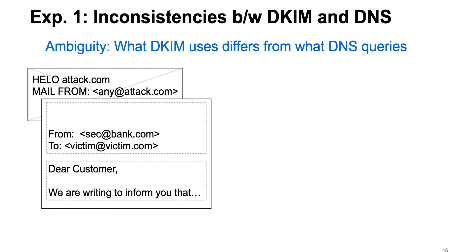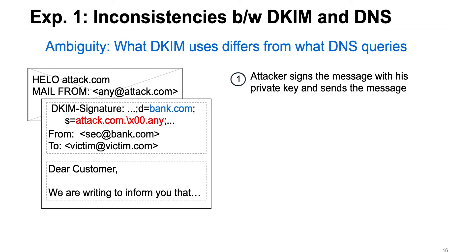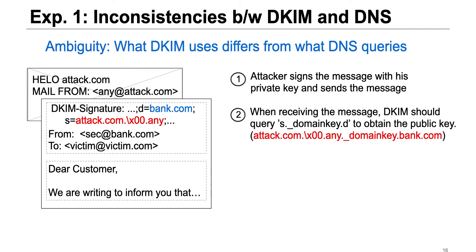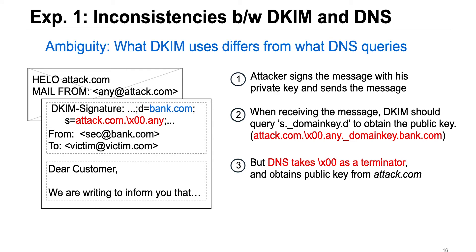The first example exploits inconsistencies between DKIM and DNS — this is the bug we demonstrated at the beginning of this talk. The attacker constructs a spoofing message and signs it with his private key to generate the DKIM signature header. In the DKIM signature header, he specifies the d= tag to be bank.com and the s= tag to include a null character. When the receiving service processes the email, the DKIM component queries s.domainkey.d to obtain the public key. But when the DNS component resolves the domain, it treats the null character as a string terminator, so the public key is actually obtained from attack.com. DKIM passes because the DKIM component uses the attacker's public key to verify the attacker's signed message, and DMARC passes because the d= tag domain equals the from header domain.